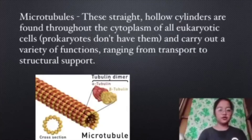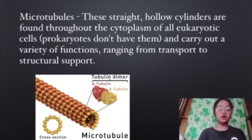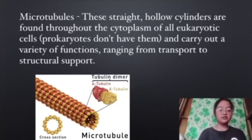Microtubules. These straight hollow cylinders are found throughout the cytoskeleton of all eukaryotic cells and carry out a variety of functions, ranging from transport to structural support.